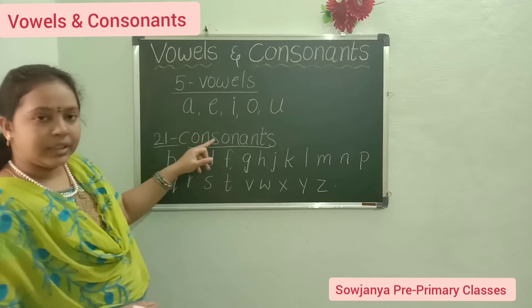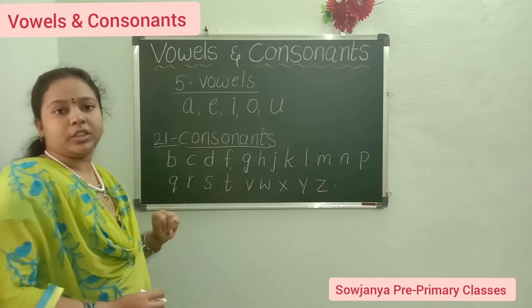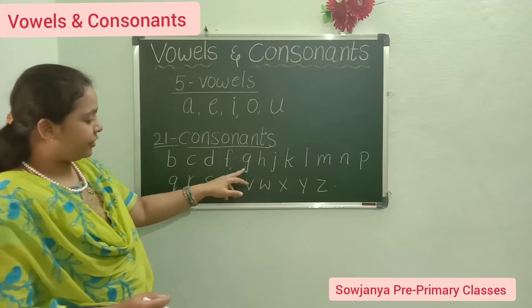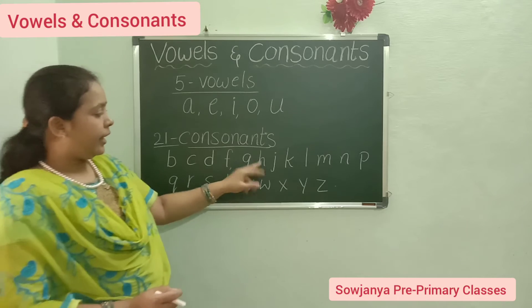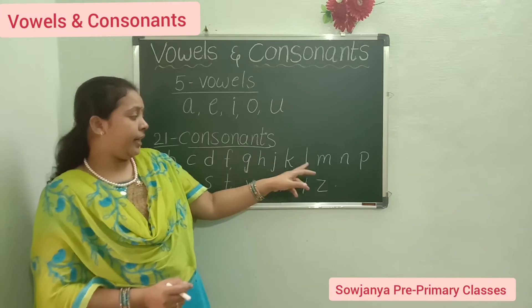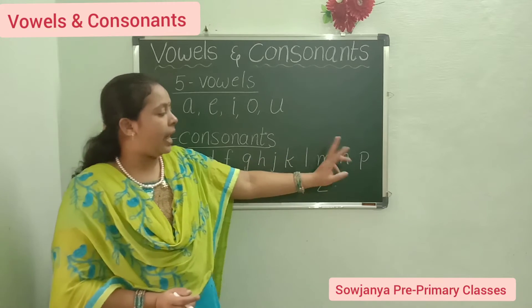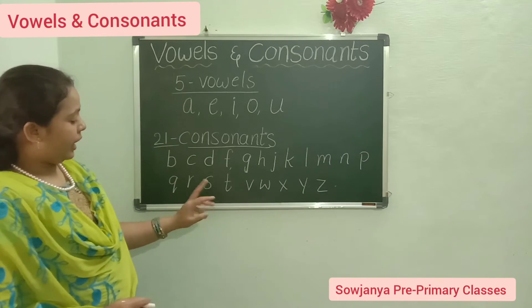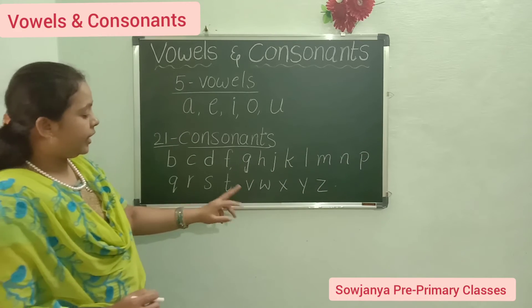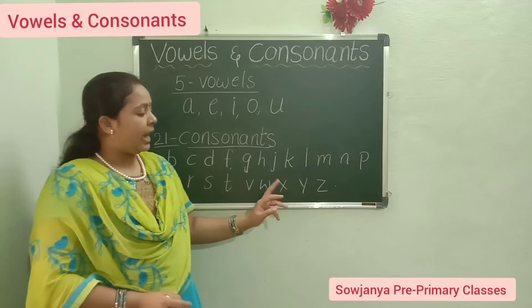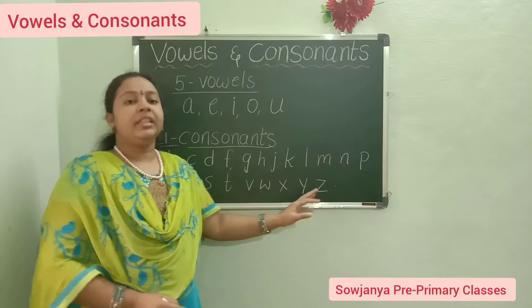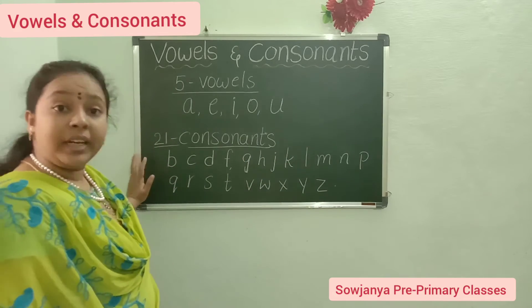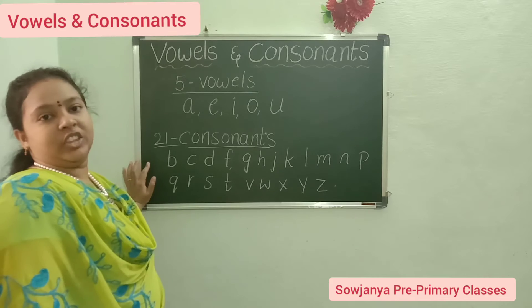And what are the names of the consonants? B, C, D, F, G, H, J, K, L, M, N, P, Q, R, S, T, V, W, X, Y, Z. How many consonants are there? Twenty-one consonants.